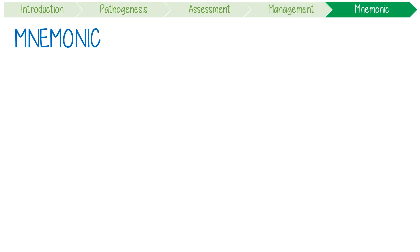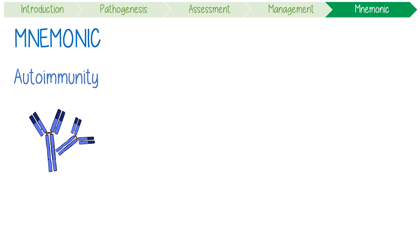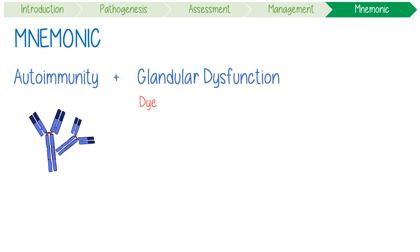Let's recap all of this with my mnemonic to summarise its diagnostic criteria. SS requires proof of autoimmunity like a positive anti-Ro or anti-La, and evidence of glandular dysfunction which you can quantify with dye, cry, MRI, or saliva.